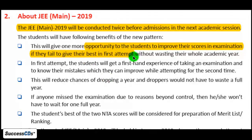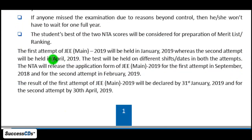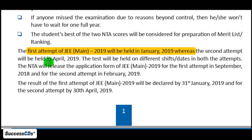JEE Main 2019 will be conducted twice before the admissions into the next academic session. This will give an opportunity to students to have two attempts. The first attempt of JEE Main will be held in January 2019 and the second one will be held in April 2019.